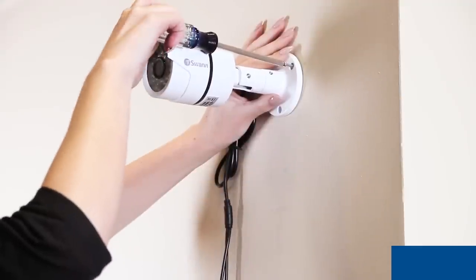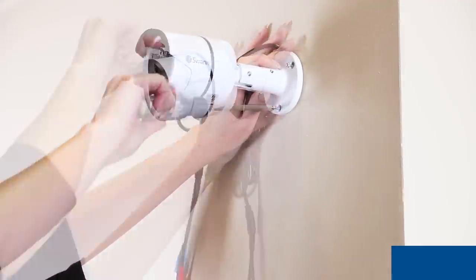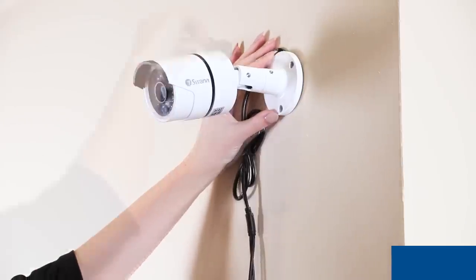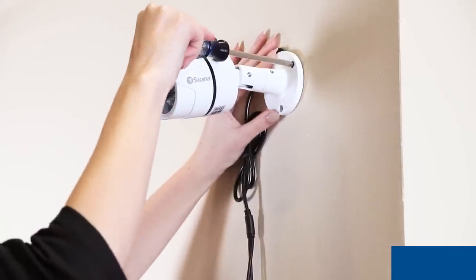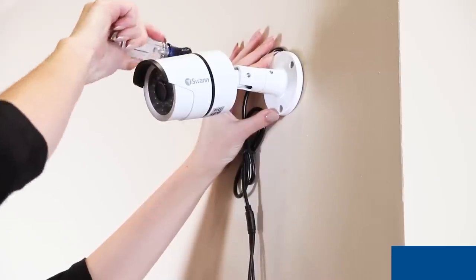Now align the camera and secure it using the supplied screws into the holes in the camera's mounting base and into the wall plugs or anchors you've just installed. Tighten the screws with a Phillips head screwdriver, but take care not to over-tighten them.